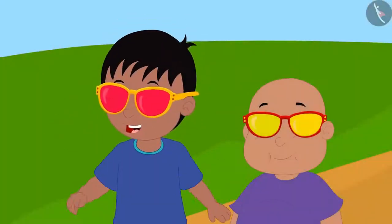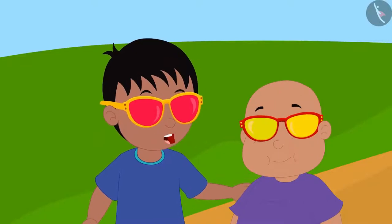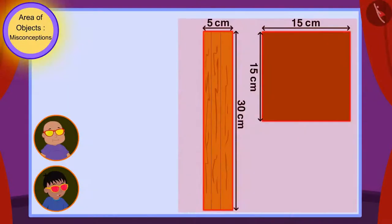Raju excitedly told Babalu, I can see the measure of the sides of both tables through my glasses. The length of the longest side of the rectangular table, 30 cm, is much more than the length of the square-shaped table's edge, 15 cm. That means the rectangle-shaped table is much larger than the square-shaped table.